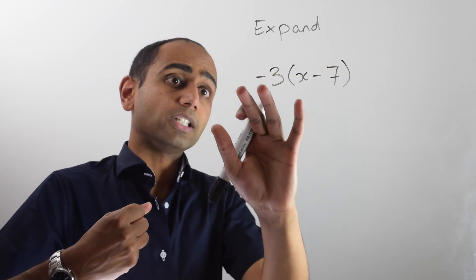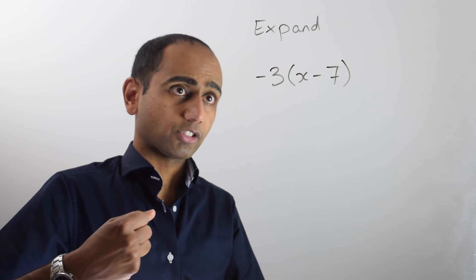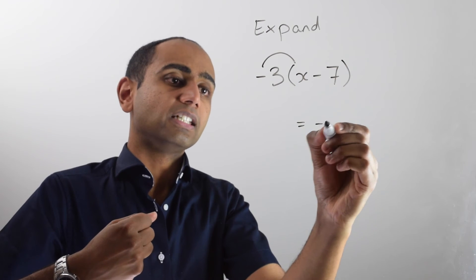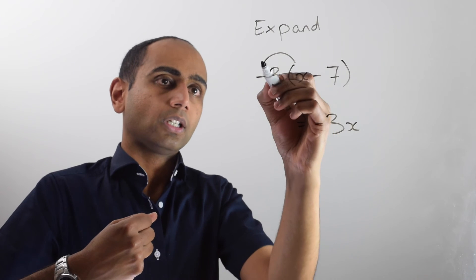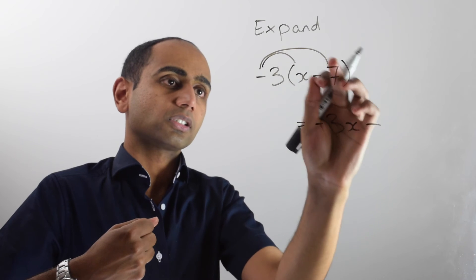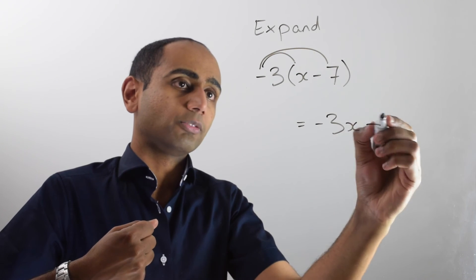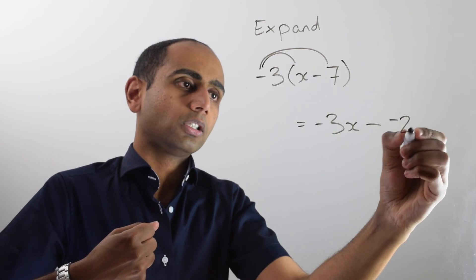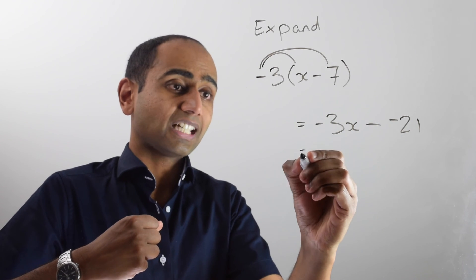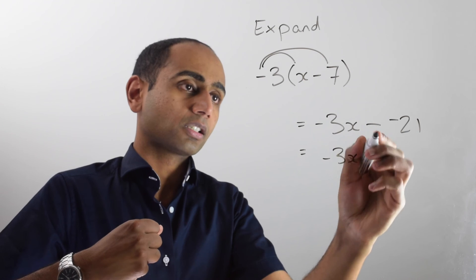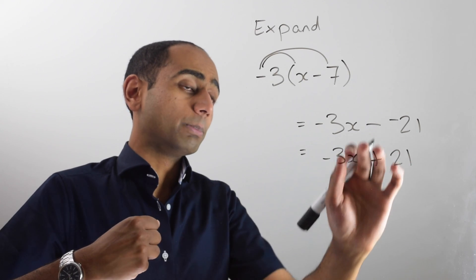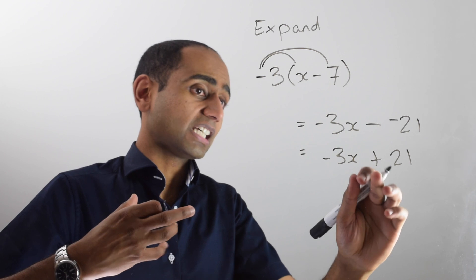In this last example, I've got negative three lots of x minus seven. Negative three lots of x is negative three x. And I'm going to take away negative three times seven, and that's going to give me negative twenty-one. Negative three times seven is negative twenty-one, and that's the same as negative three x plus twenty-one. Remember, subtracting a negative is the same as adding.